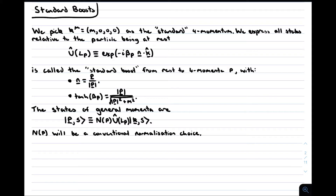It is entirely our choice which linearly independent set of vectors we choose as the basis in a degenerate subspace. With this definition, choosing a basis for s in the rest frame of the particle will define the basis for s in all frames of reference. We also have a conventional normalization factor N(p), which we will choose later.